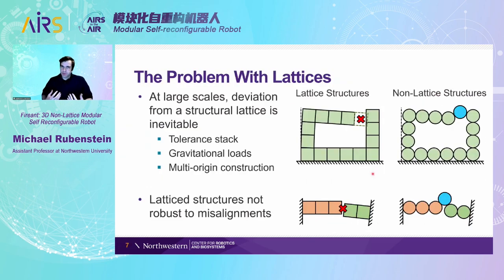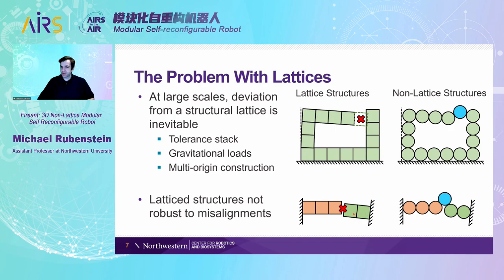Some problems with lattice-based systems include issues related to tolerance stacking and warping due to gravitational load. For example, if there's a bunch of modules in a lattice and you want to connect from one side to the other, any warping means they can't make that connection. Also, if you start from different origins — say building a bridge from both sides of a river — and you don't perfectly match where the bridges start, there may be an issue attaching the lattices. That's one advantage of a non-lattice structure: it makes it relatively easy to counteract imprecision due to tolerance and to build from multiple origins.